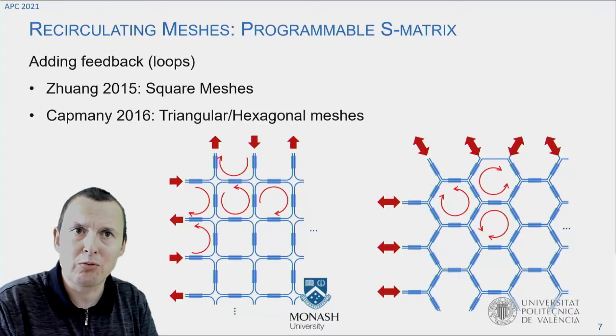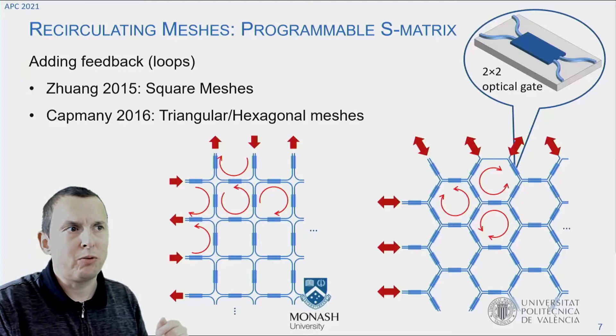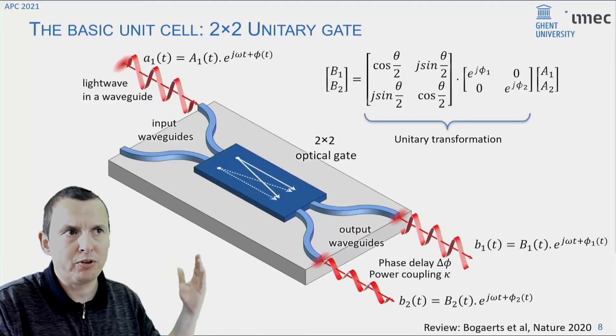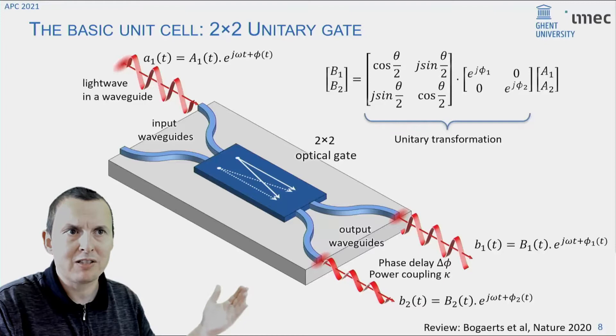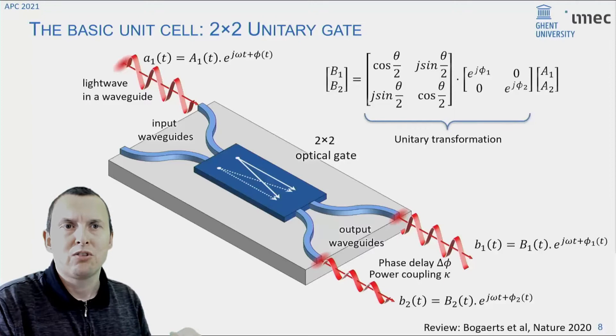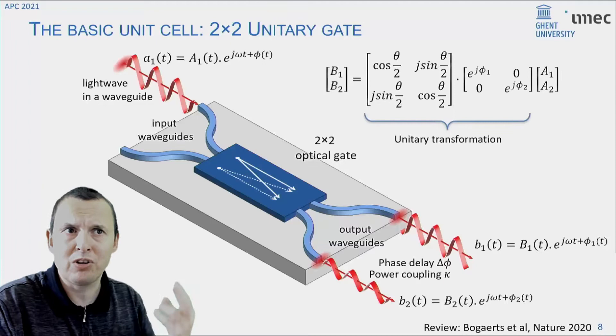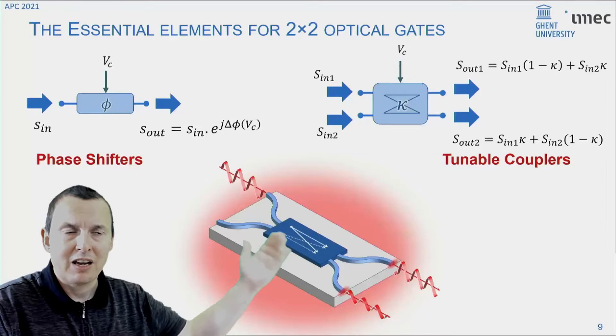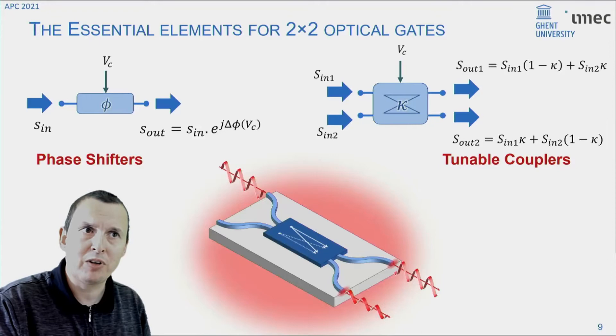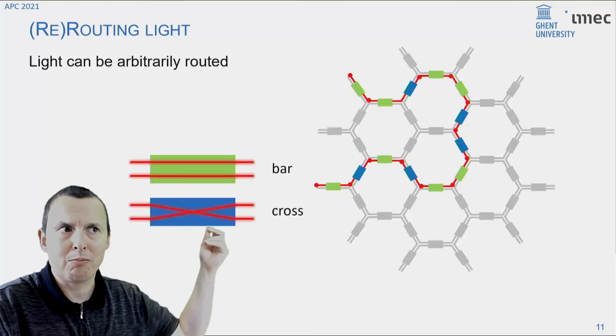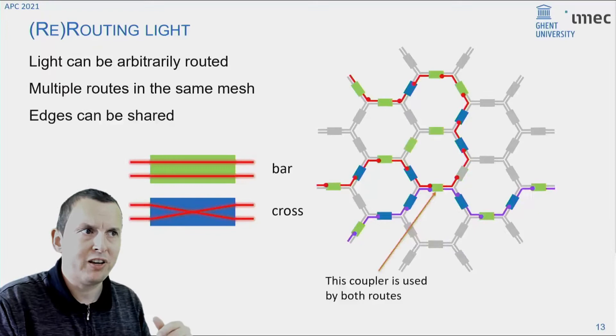Now, the key element, or the key building block to make this work, is called a 2x2 optical gate. And a 2x2 optical gate is essentially a four-port device, which acts as a tunable coupler, in the sense that it mixes the light from the two input waveguides into the two output waveguides, but it also adds a phase control, so you can control the phase delay between these ports. So the minimum components that you need to make this work are essentially just two. You need a way to induce a phase shift, and you need a way to induce a tunable coupling.